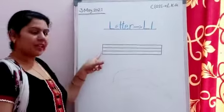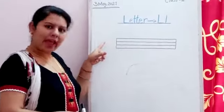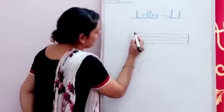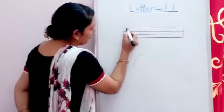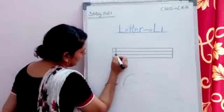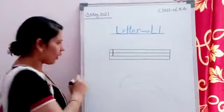Firstly, we will see how to write capital letter L. Standing line. Start from the dot. Make a standing line between three lines.